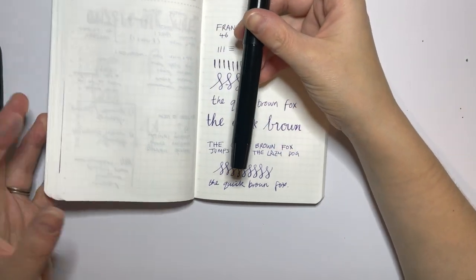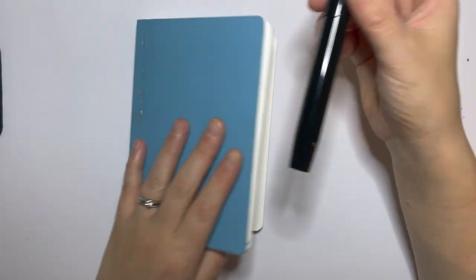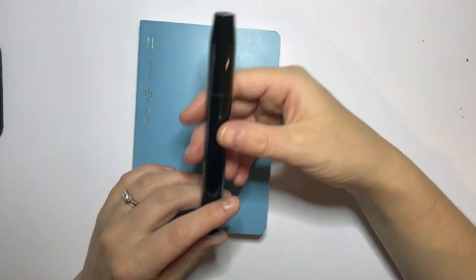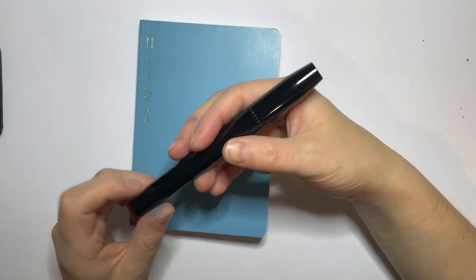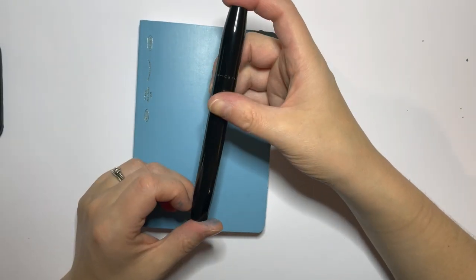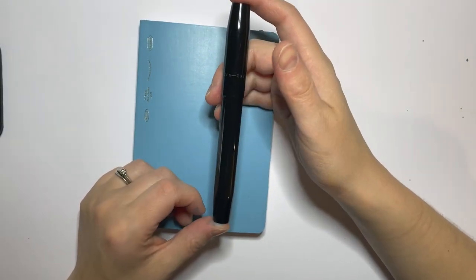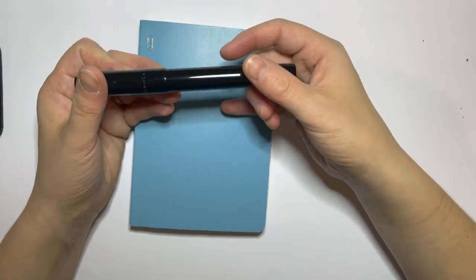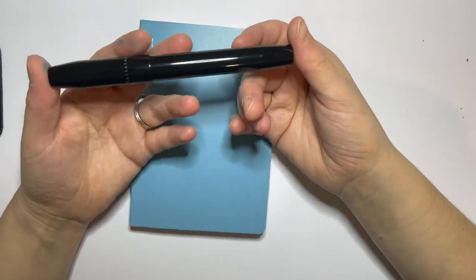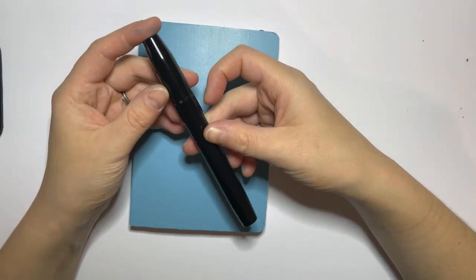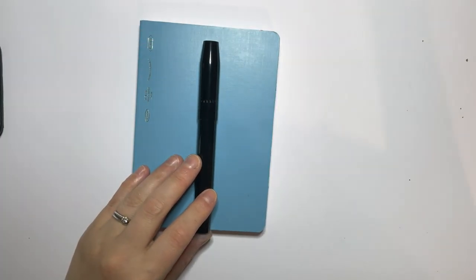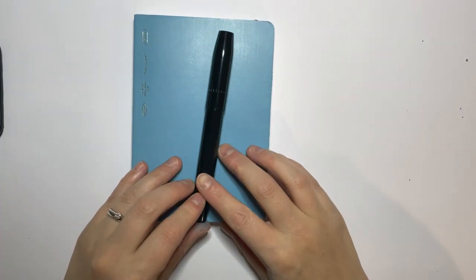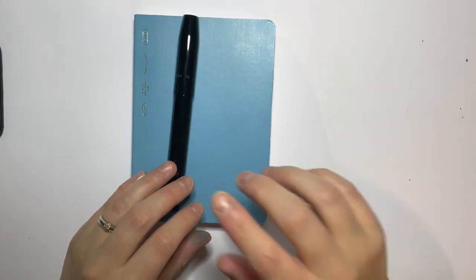That is going to be the end of this video. I would love to know if you guys have a Franklin-Christoph—what model do you have, what do you like? And if you have a vintage green, let me know, because are they as beautiful in real life as they look on Instagram and on the computer? Because I think they just look stunning. Thank you so much for watching. If you could hit like and subscribe, that would be great, and I'll chat to you guys again soon. See you later!